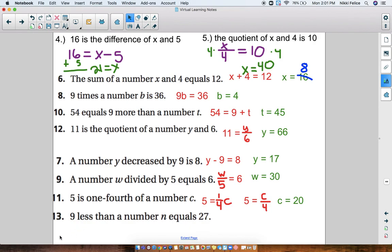And last, we have 9 less than a number N equals 27. 9 less than a number N means that you do N minus 9. Make sure you have it written in this order. That's important. N minus 9 equals 27. Then you use addition as your inverse operation to solve for N. We get that N equals 36. And that's it. Thank you for watching.